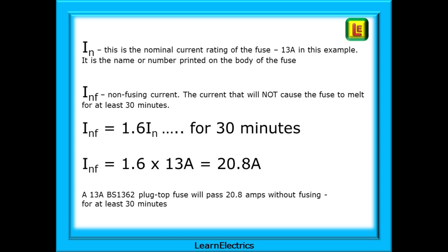INF is the non-fusing current, the constant current that will not cause the fuse to melt for at least 30 minutes. And INF is specified as 1.6 times the value of IN and, as we said, it must hold this for 30 minutes. So, for our 13 amp fuse, the non-fusing current is 1.6 times the nominal current which means we have 1.6 times 13 amps which gives us 20.8 amps. We can say that a 13 amp BS1362 plug-top fuse will pass 20.8 amps without fusing for at least 30 minutes.